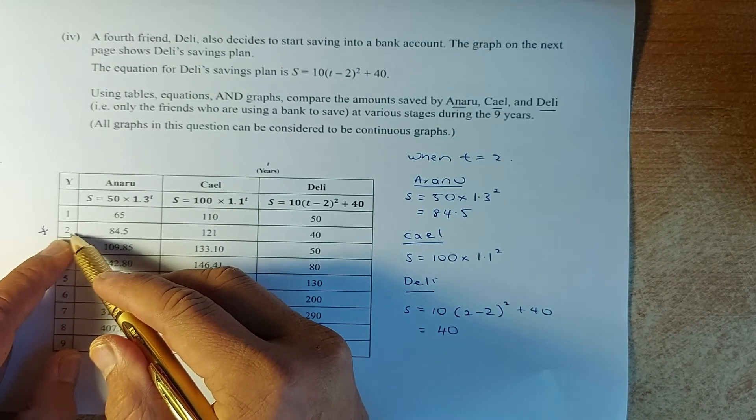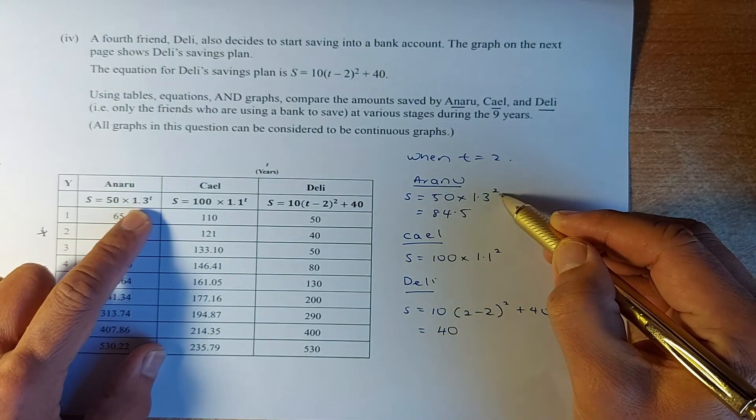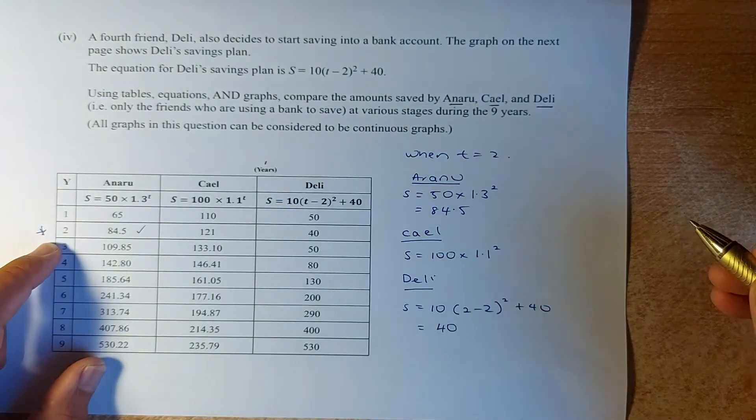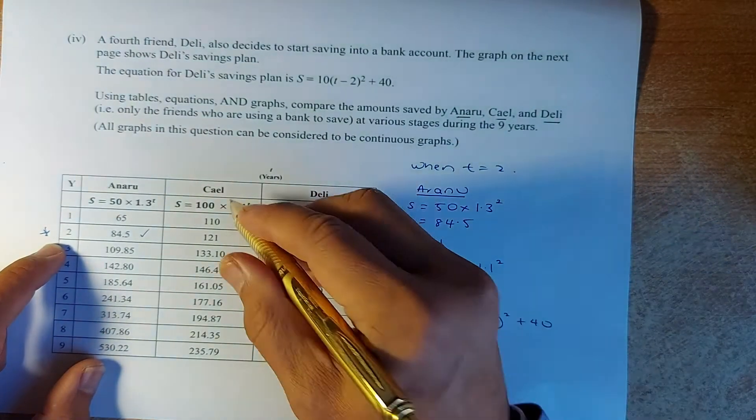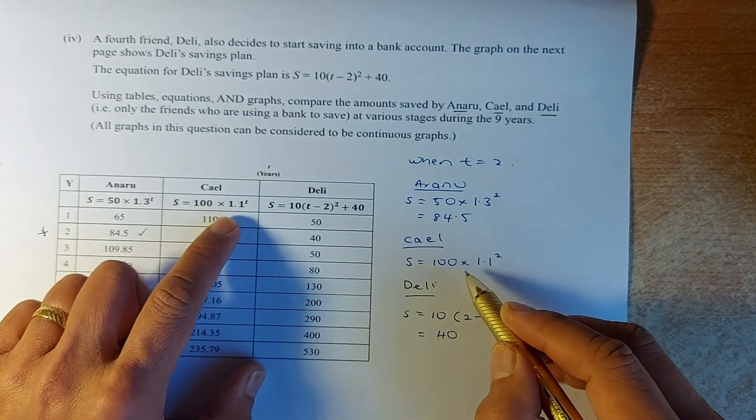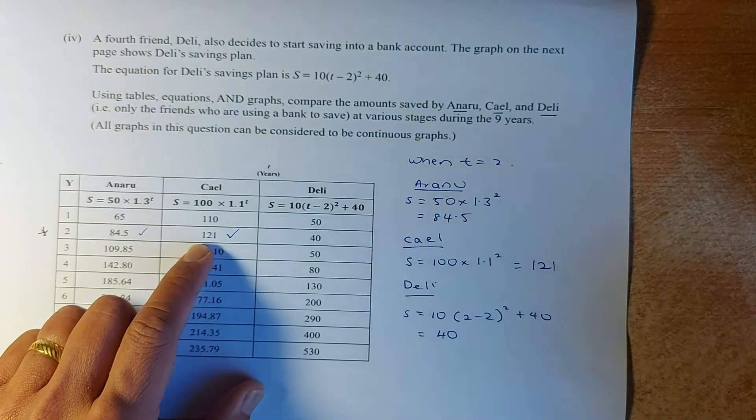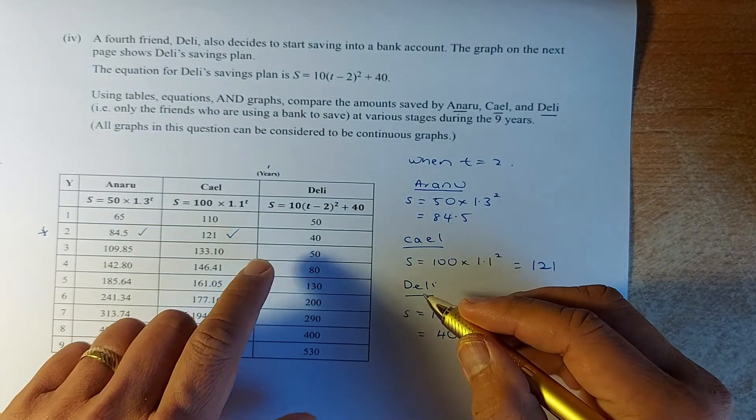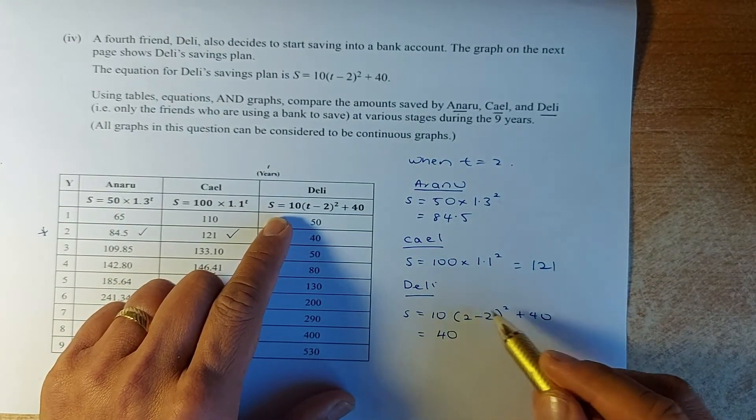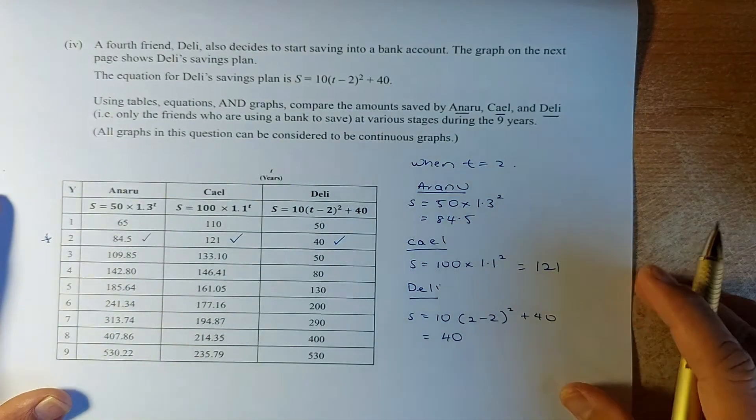Okay so now we are just going to substitute the numbers. So we're going to substitute 1 up to 9 and get the values from the table. So for simplicity's sake, we're going to choose only 1. We're going to do 2. Okay, we take time equal to 2 years. So when t equals 2, Anaru has this formula: 50 times 1.3 power squared because t is replaced by 2. Put in your calculator, it's 84.5. That is how we get 84.5. Got it? Great. Kale, Kale's formula is this: 100 times 1.1 to the power of 2 and we found it to be 121 dollars. So that's why we get 121 dollars. And of course, Deli, when t equal to 2, very simple. t 2 minus 2, this part is going to be 0. So 10 times 0 is 0. So the answer is 40. That's how we get 40. So do the rest for year 1 to year 9 and you come up with this table.